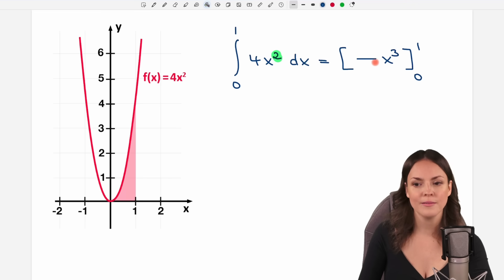Then in front, we're going to write a fraction. Take our new exponent and write it down here, and on top we're going to write the number that was in front of our x part. So the 4 goes on top here. This is my antiderivative of this function.